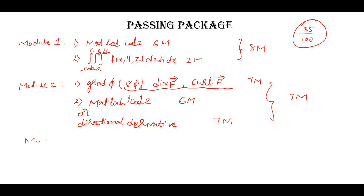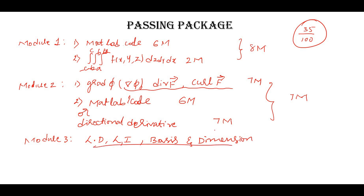Moving on to Module 3, you have vector space. I will not stress more on vector space. If you study linearly dependent problems, linearly independent problems, basis, and dimension — these are all the same concept. Studying these four concepts will definitely get you seven marks from Module 3. So if you study these three modules, you are already getting 22 marks from modules 1, 2, and 3 alone.